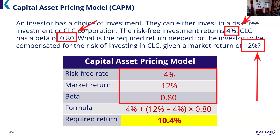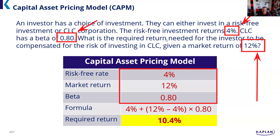A return of 12% would be exciting compared to our expected 10.4%. So under CAPM we'd be hoping CLC returns 10.4% to us. But again, it's just a model — I joke that all the models and theories aren't truth, they're just a way of explaining things. I hope that little overview of CAPM was helpful.